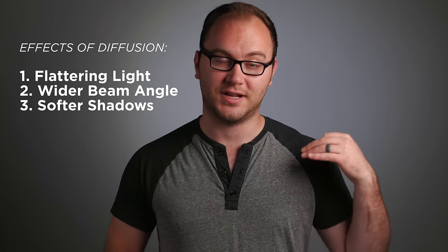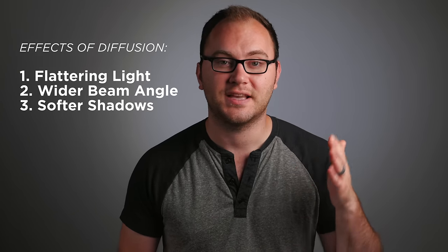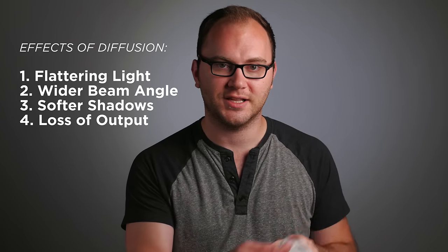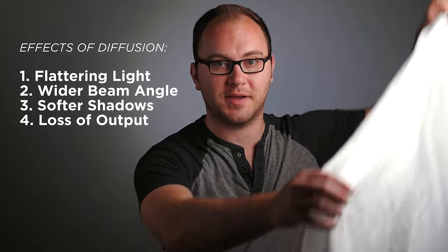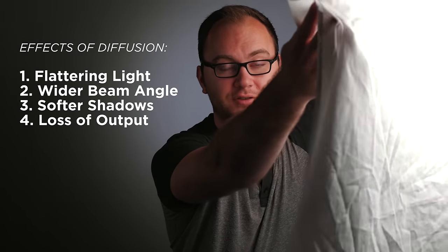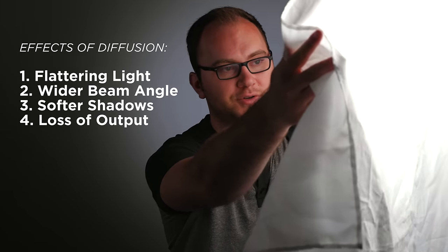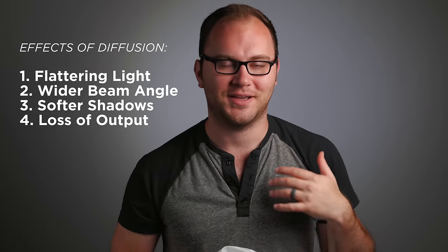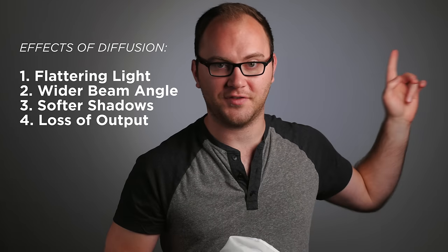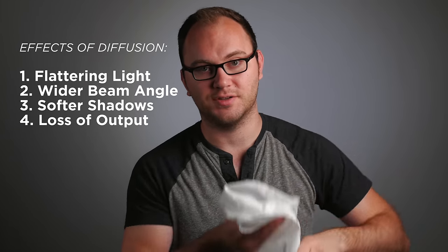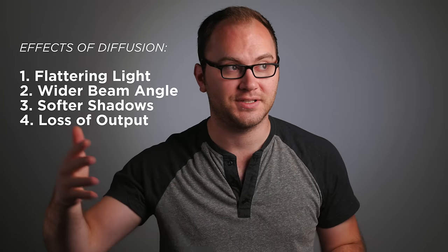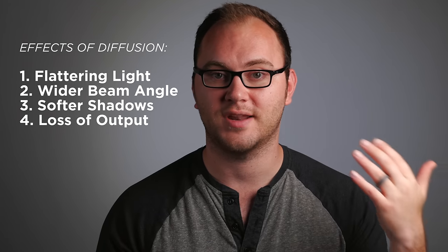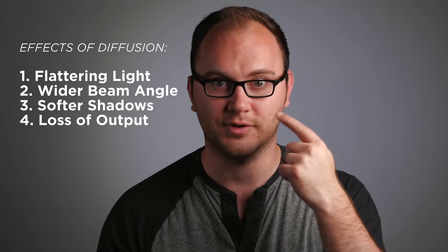Another effect that's often a negative effect when it comes to diffusing light is that you're cutting down the output of your light source. So you can't just willy-nilly add diffusion and expect your exposure to be the same. You'll get a softer light, but you're going to lose some exposure. So you have to keep that in mind. And often I try to get really bright lights, not because I want to put them 50 feet away, but because I want to shoot them through layers of diffusion and I need to compensate for that lack of output.